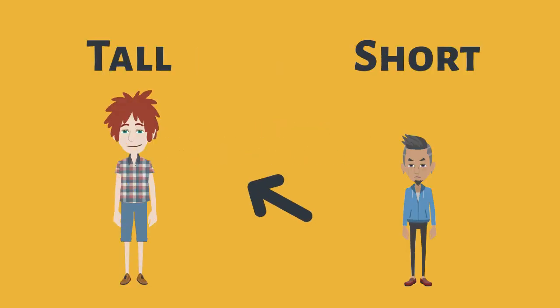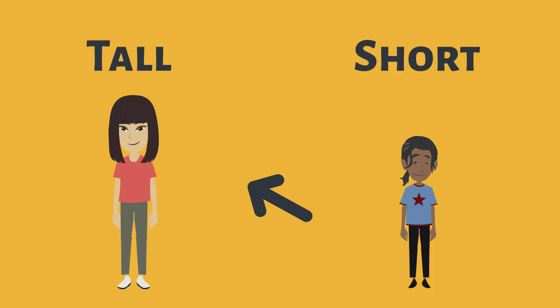For example, Mike is a tall boy, while his brother David is a short boy. Julie is a tall girl, but her sister Amy is a short girl.